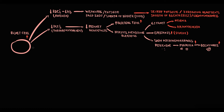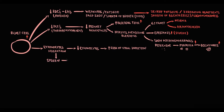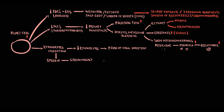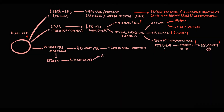Increasing blast cells force lymphoid cells to migrate from the bone marrow, so the production of lymphocytes decreases and lymphopenia develops. Lymphopenia markedly increases the risk of viral infections. Increasing blasts force lymphocytes to migrate from the bone marrow initially to the spleen, and as a result the size of the spleen increases — splenomegaly develops.